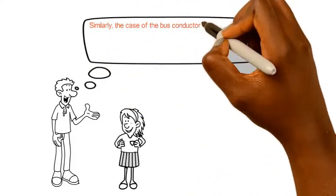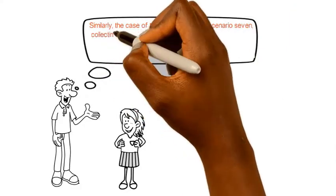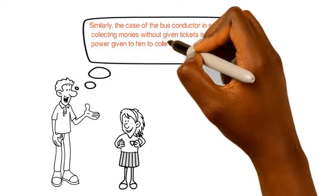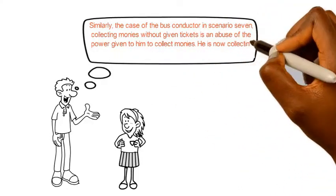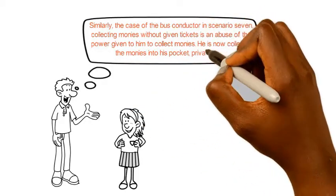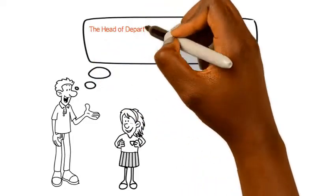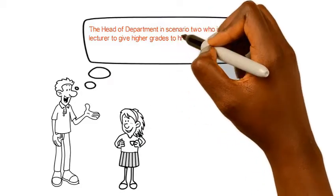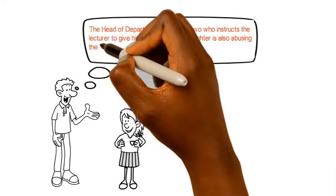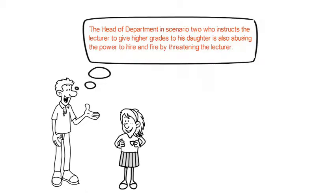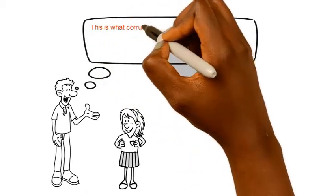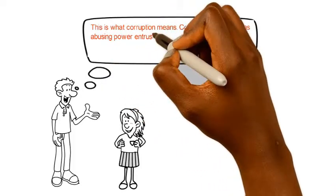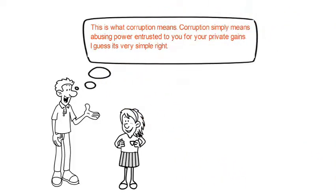Similarly, the case of the bus conductor in Scenario 7 — collecting monies without giving tickets is an abuse of power given to him to collect monies. He is now collecting the monies into his pocket — private gains. The head of department in Scenario 2, who instructs the lecturer to give higher grades to his daughter, is also abusing the power to hire or fire by threatening the lecturer. Corruption simply means abusing the power entrusted to you for your private gain.